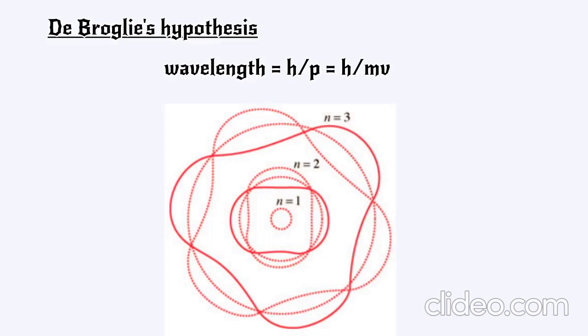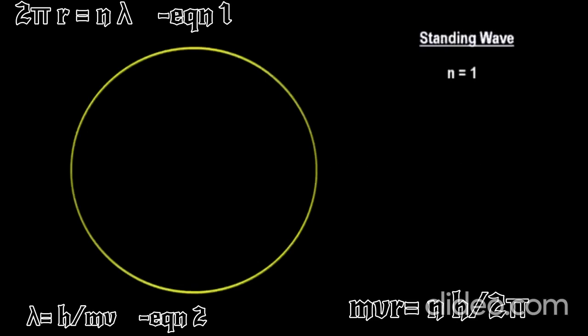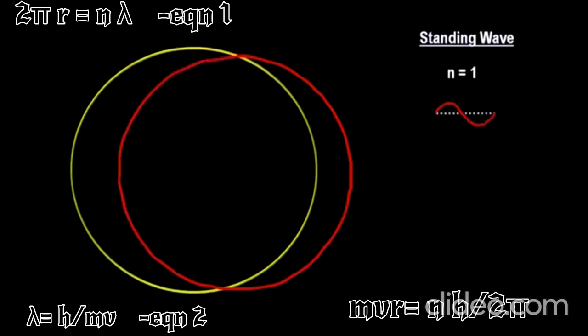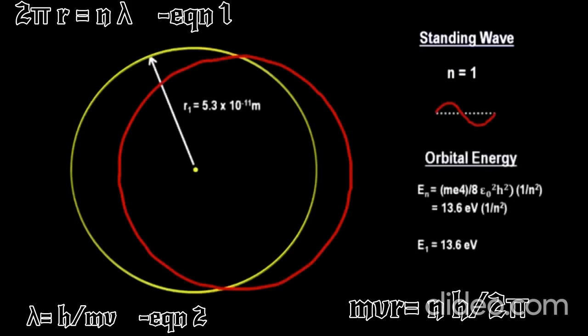Let's try to prove it. We know lambda equals h by mv. Now the matter wave associated should be an integral multiple of the wavelength. Otherwise, it would cancel out doing destructive interference. So 2πr equals n lambda. Now replacing lambda with the previous equation, we get mvr equals nh by 2π, or n h-bar.